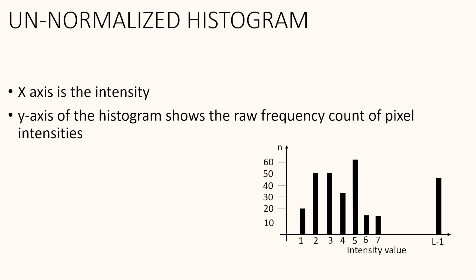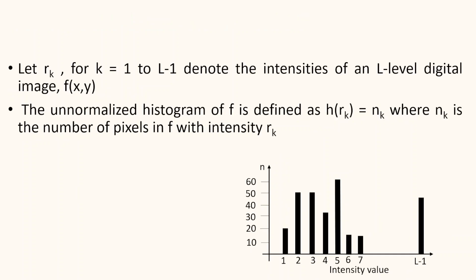In an unnormalized histogram, the x-axis gives the intensity and the y-axis gives the count of different intensity levels — that is, the y-axis shows the raw frequency count of the pixel intensities. Unnormalized histograms are important in applications where the absolute number of pixels with a particular intensity value matters. Each subdivision of intensity values is called a histogram bin. Here, Rk denotes the intensity of an L-level digital image, meaning intensity values range from 0 to L-1. An unnormalized histogram is defined as H(Rk) = Nk, where Nk is the number of pixels in the image with intensity Rk.